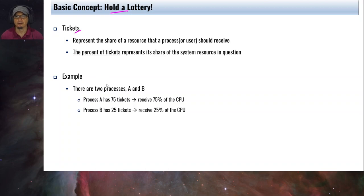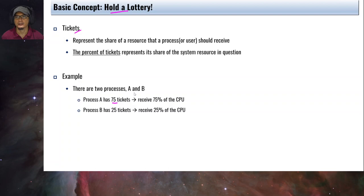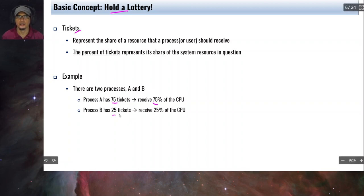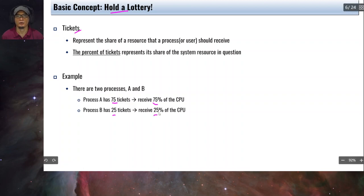We represent the percentage of tickets as the share of the system resource for that particular process. For example, if we have two processes A and B, and process A has 75 tickets out of 100 total tickets, then process A will have a 75% share of the CPU. If process B has 25 tickets, then process B will receive 25% of the CPU.